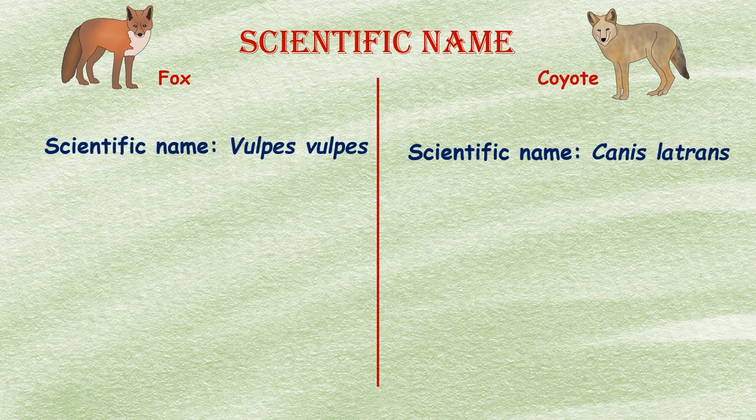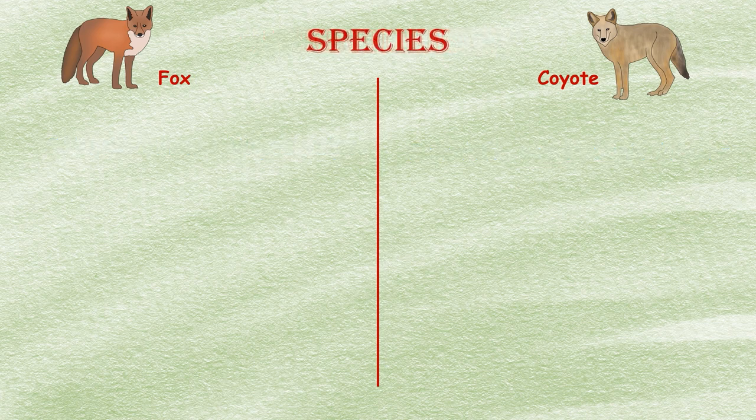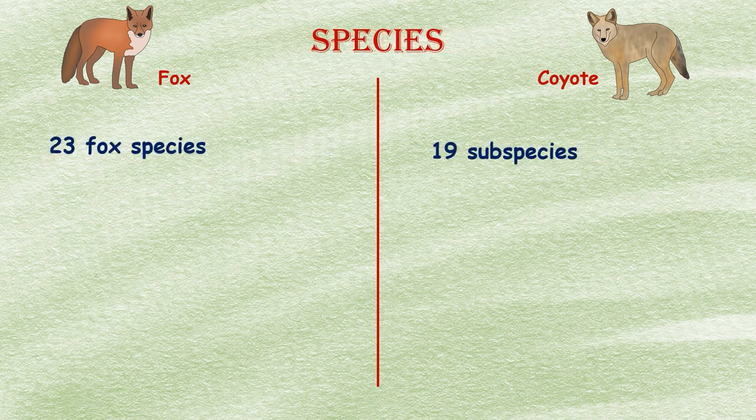The scientific name of the fox is Vulpes vulpes, while the scientific name of the coyote is Canis latrans. Throughout the world there are 23 fox species, among them red and gray foxes are more common, while coyotes have a total of 19 subspecies present around the globe.